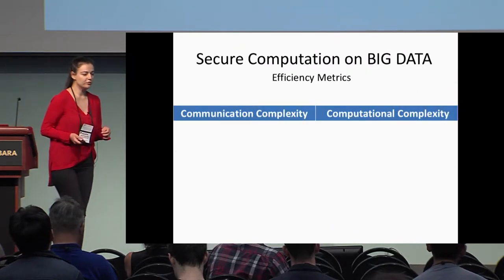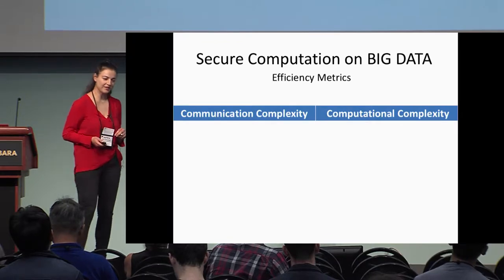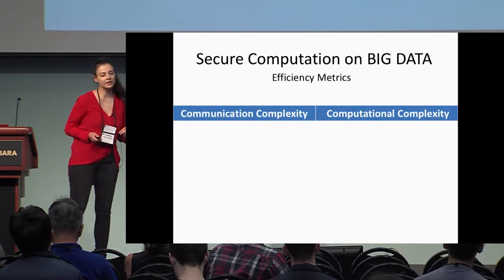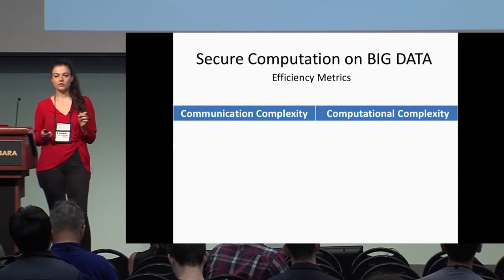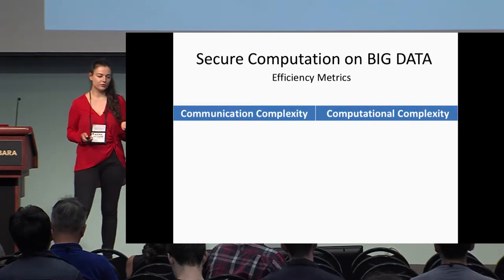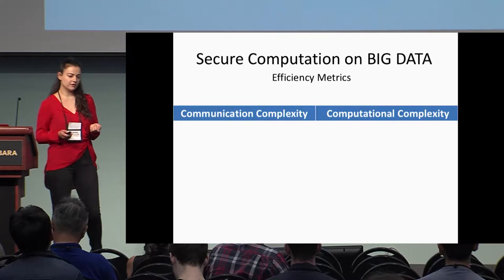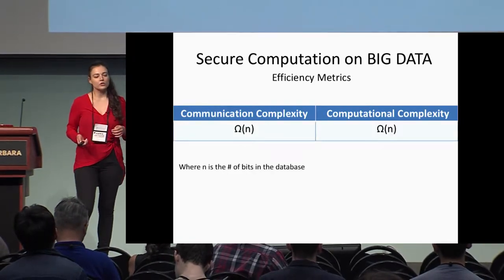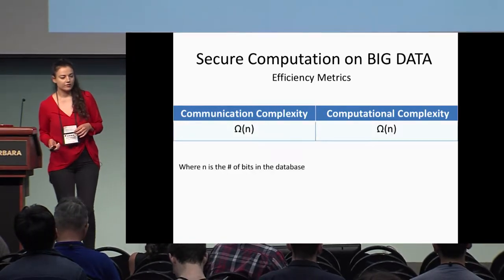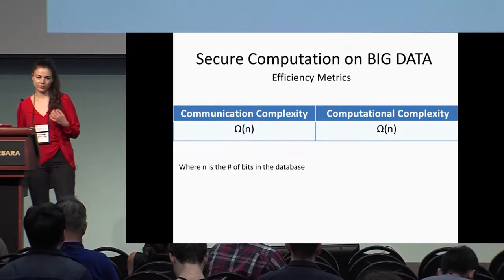The efficiency of secure two-party computation protocols on big data refers to how much data we need to transfer during execution of the protocol — referred to as communication complexity — and how quickly the protocol runs, referred to as computational complexity. We don't want complexities that grow linear with the input size of the database.